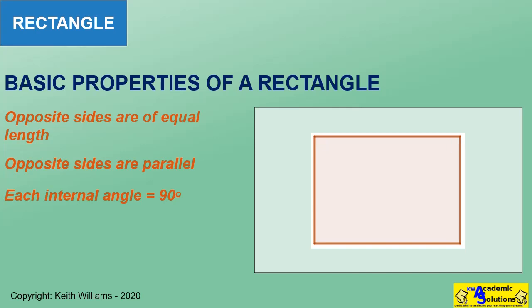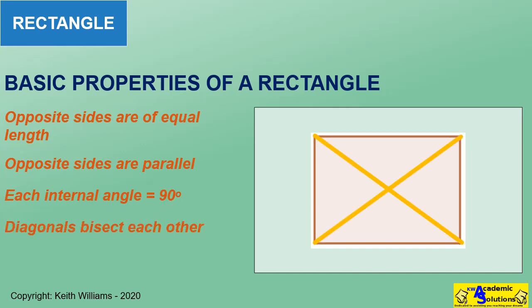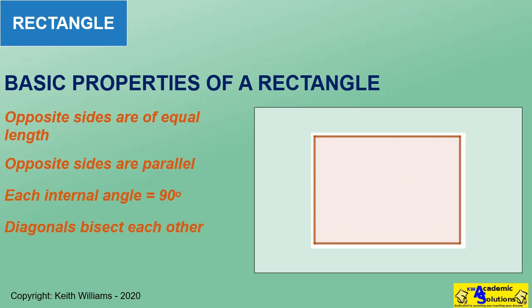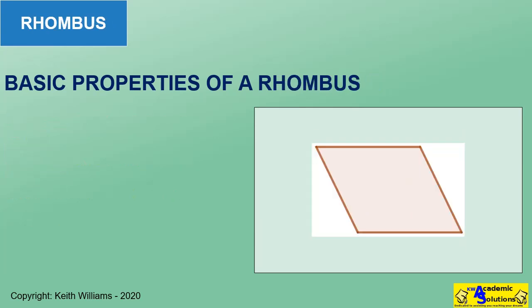The diagonals of a rectangle bisect each other. All sides of a rhombus are of equal length.